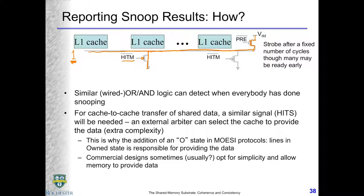This is really OR logic — anybody who has a HIT-M, anybody who has data in modified state, will intervene and the system enters intervene mode. Wired logic is a very fast, typically dynamic logic way of getting this done. Cache-to-cache data transfer then happens. Similarly, you can have a wire that tells you whether some cache has the data in shared state, called HIT-S. This is useful because if we know someone else has the data in shared state, we can infer whether we should go into shared state or exclusive state.